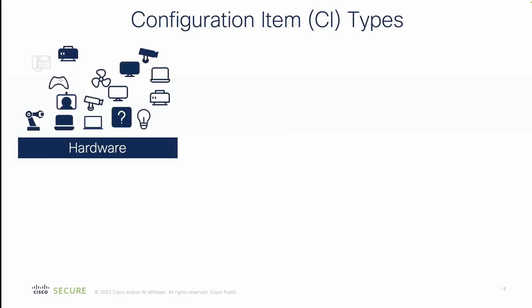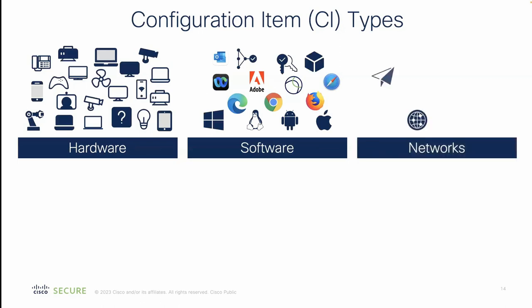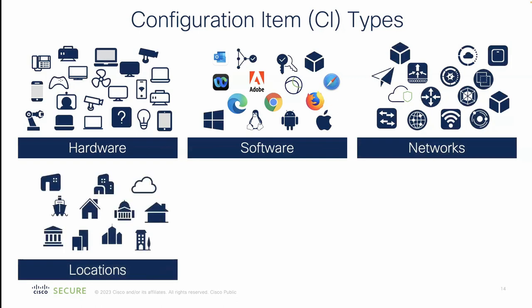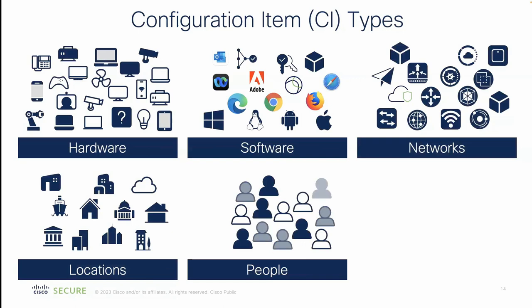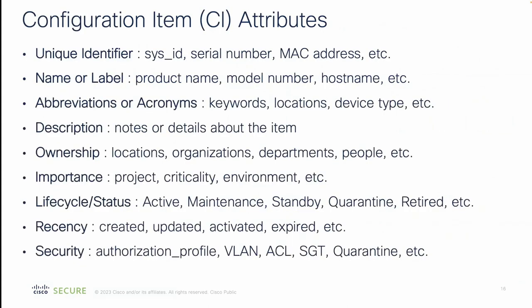Examples of CIs include network endpoint hardware, software running on those devices - important for asset tracking, updates, or vulnerability assessment. There are also networking devices with their lifecycle, updates, and different locations where things may live. People that own them, the department or site where it lives - that may be important to an authorization rule inside ICE. There could also be documentation as well.